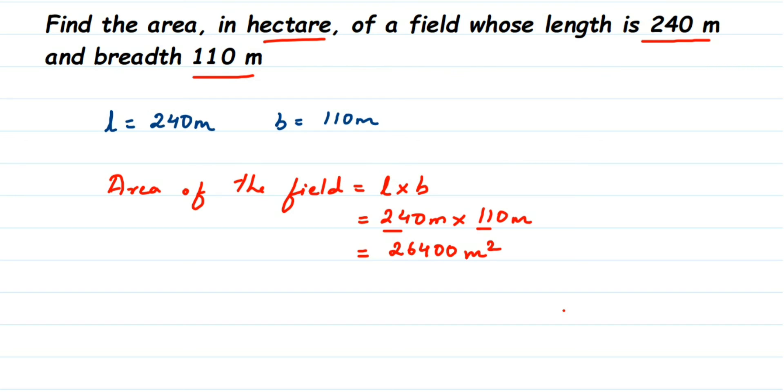Now this is in meter square, we are going to convert this into hectares. How to do this? We know that 1 hectare is equal to 10,000 meter square. So we are converting meter square into hectares which means we are converting a smaller unit to higher unit because meters are small, hectares is big.